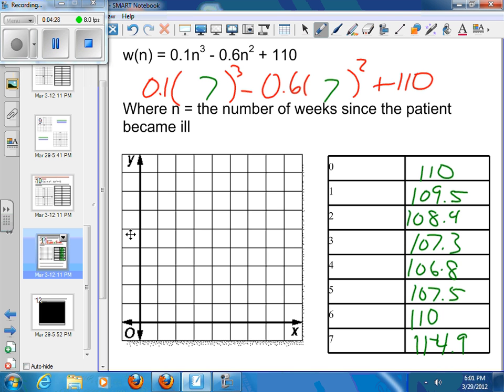So my smallest number up here is approximately 106. So I'll make a break in my graph, and I can start this at 106, 107, 108, 109, 110, 111, 112, 113, and 114.